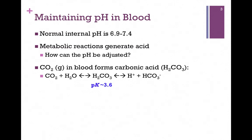One of the most important buffering systems involves carbon dioxide. It dissolves in blood to form carbonic acid, H2CO3. The equilibrium expression is: CO2 plus water forms carbonic acid, H2CO3. The pK is around 3.6 — very low — so it readily dissociates to H+ (also denoted H3O+) plus bicarbonate, HCO3-.